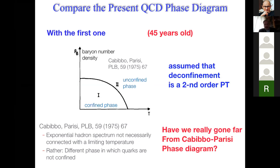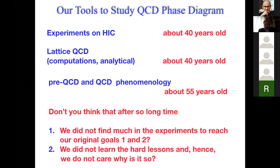The question is, have we really gone far from the Cabibbo-Parisi phase diagram? Let's discuss our basic tools. Experiments on heavy ion collisions are almost 40 years old. Lattice QCD computational and analytical is about the same age, 40 years. From the Hagedorn paper, which was pre-QCD phenomenology, our phenomenology tools are 55 years old.